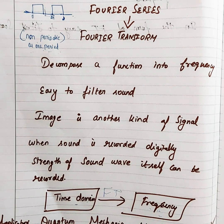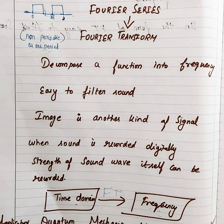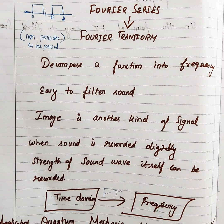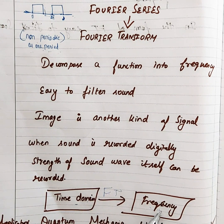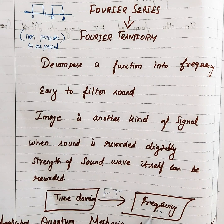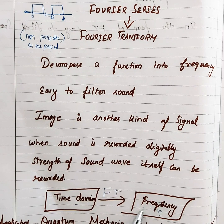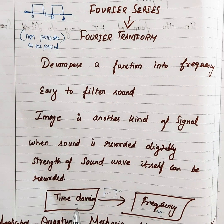A Fourier transform decomposes a function from the time domain into the frequency domain. It is easy to filter sound, and even an image is another kind of signal. When sound is recorded digitally, the strength of the sound wave itself can be recorded — that is the raw waveform. This transform changes from time domain to frequency domain, where even differential equations are easier to analyse. To get back into the same format, we use the inverse Fourier transform to change the result back to the time domain.